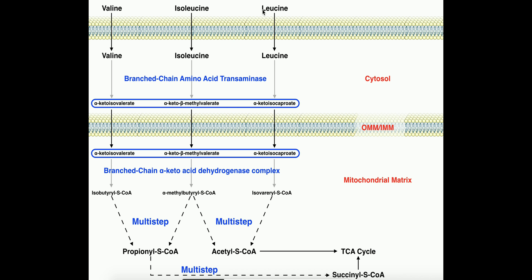First of all, let's start off with some general things. What are BCAAs? You've probably seen in a drugstore BCAA powder or tablets, and those are actually just three amino acids: valine, isoleucine, and leucine.